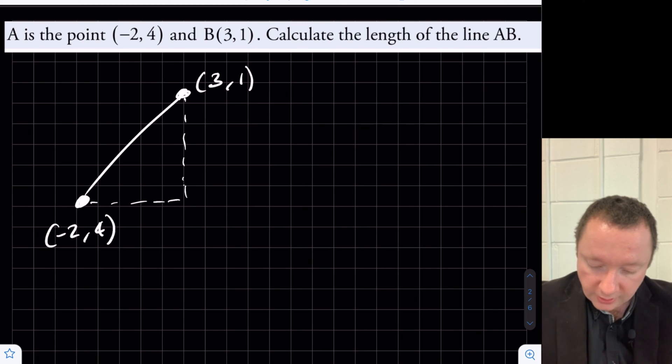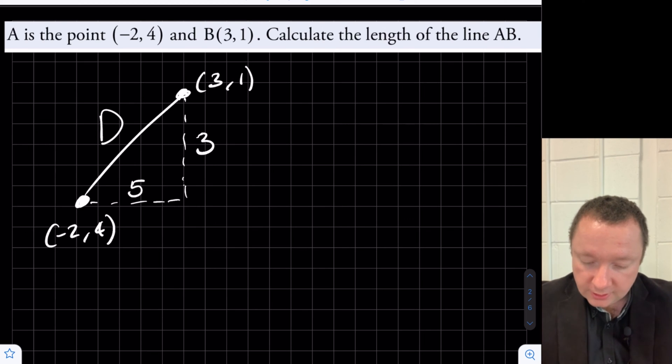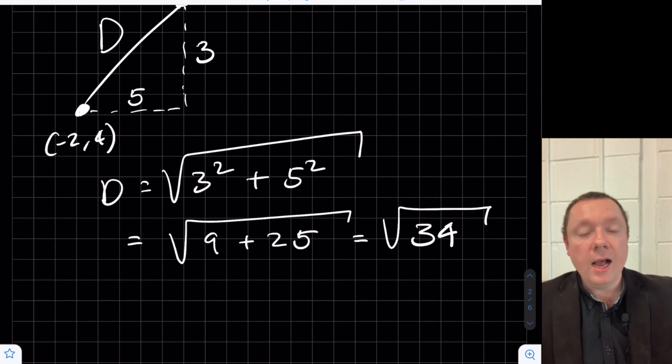X2 minus x1, so 3 minus minus 2, that would be 5. Y2 minus y1, the distance in them is 3. So our distance is simply going to be the square root of 3 squared plus 5 squared. That's the square root of 9 plus 25, which is the square root of 34. And we can just leave that as the square root of 34 as a surd in its simplest form.